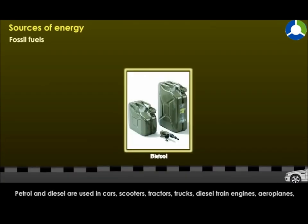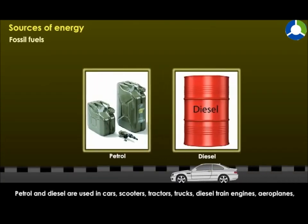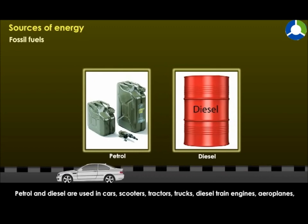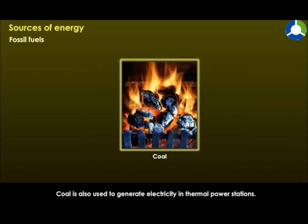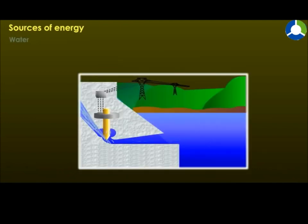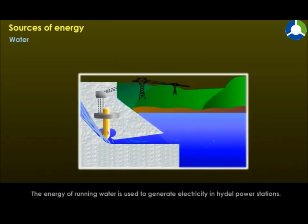Petrol and diesel are used in cars, scooters, tractors, trucks, diesel train engines, aeroplanes, motors, and other vehicles as fuels to produce energy. Coal is also used to generate electricity in thermal power stations.